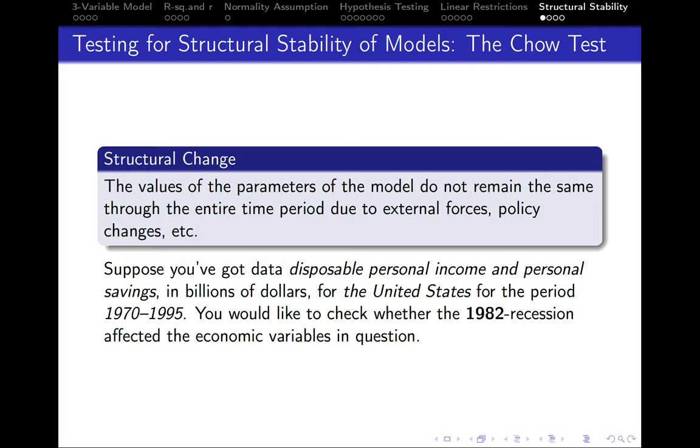It might happen that the values of the parameters of the model don't remain the same through the entire time period due to some external forces like financial crisis, for example, or some policy changes. Because of that, it might happen that if we split the sample, we will get different parameters, completely different.